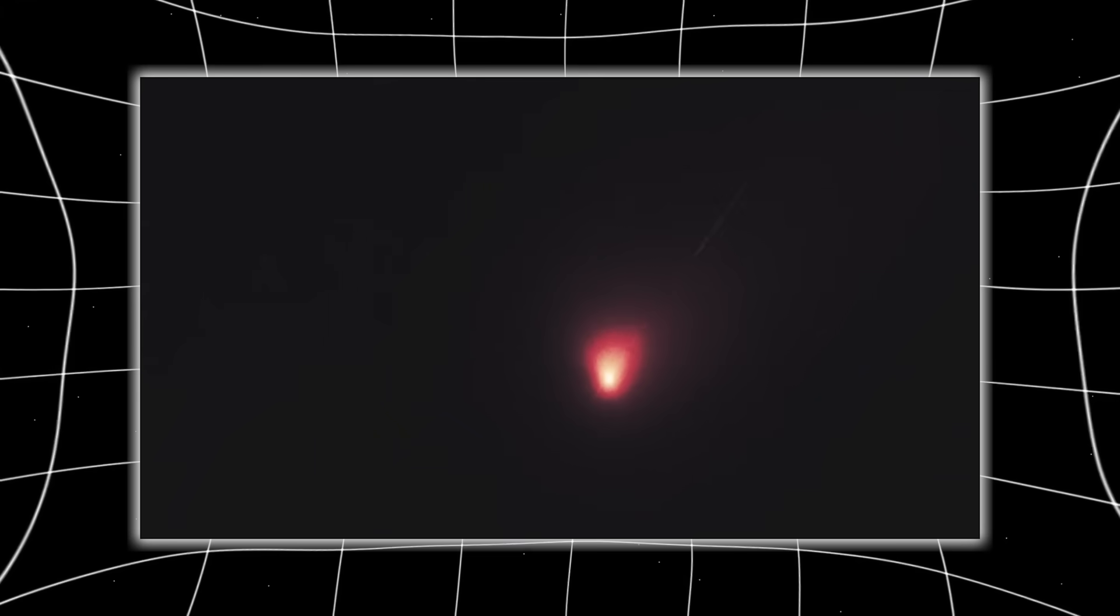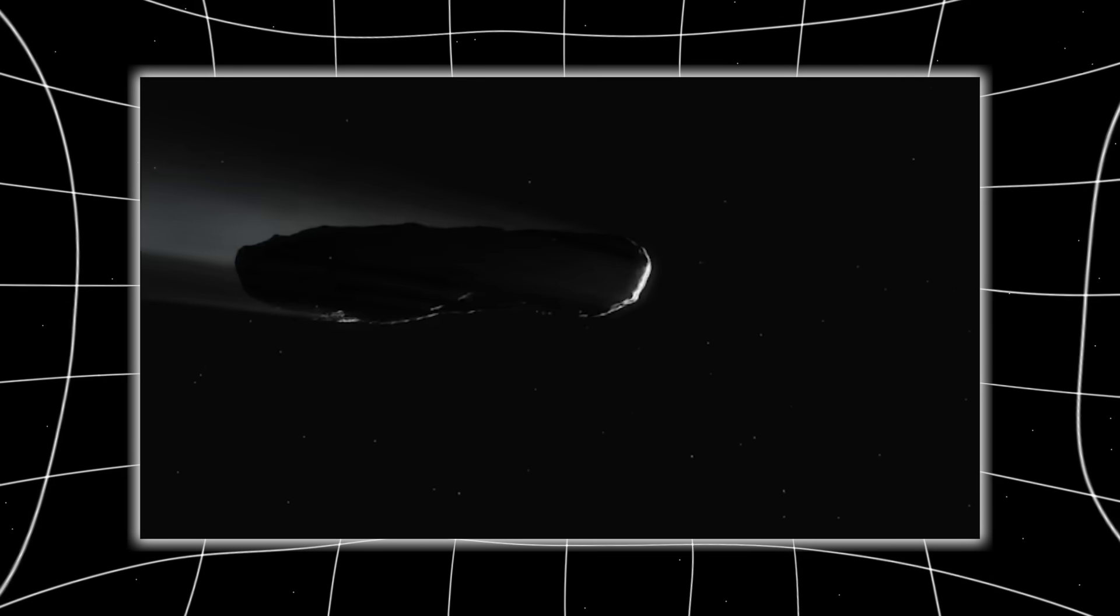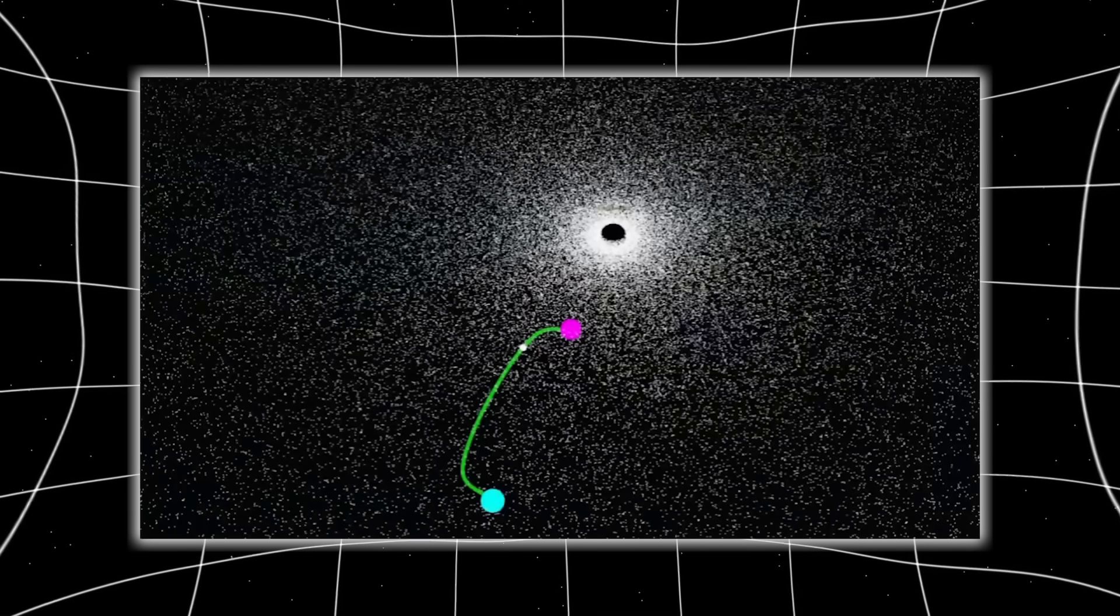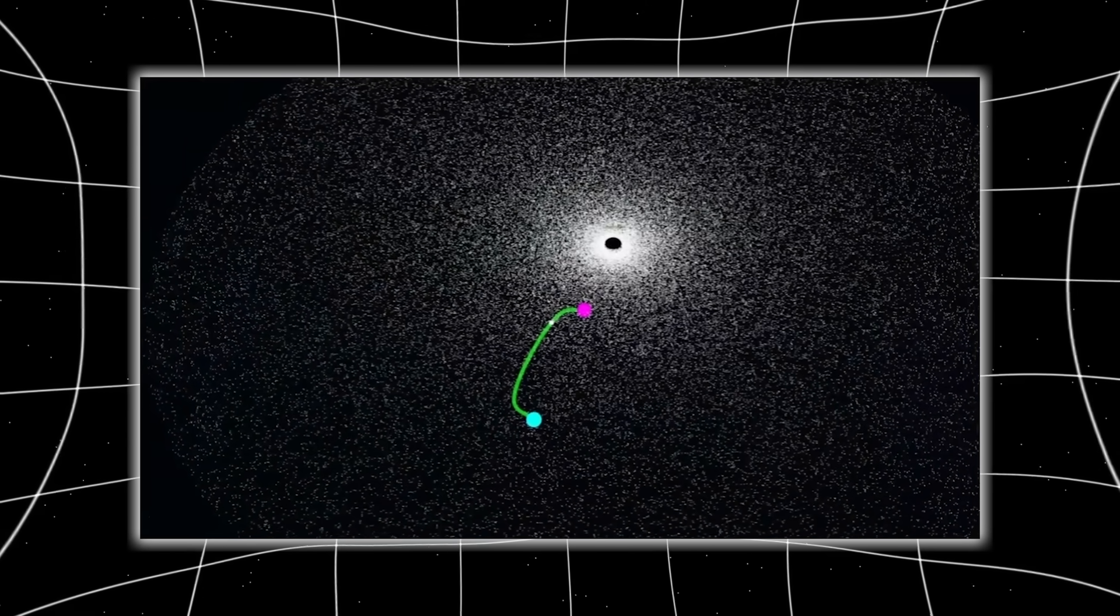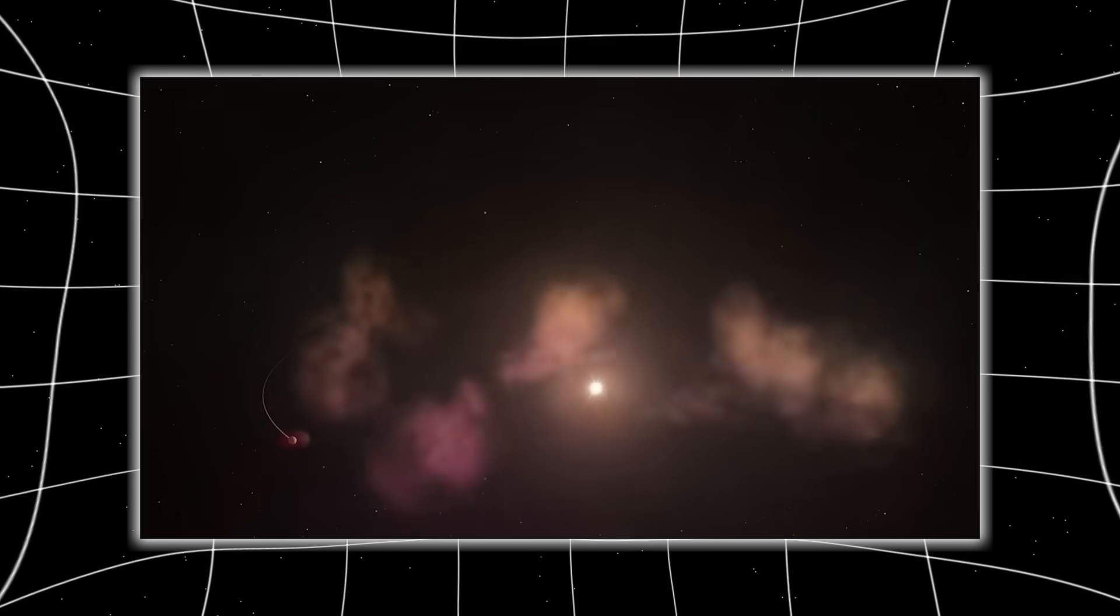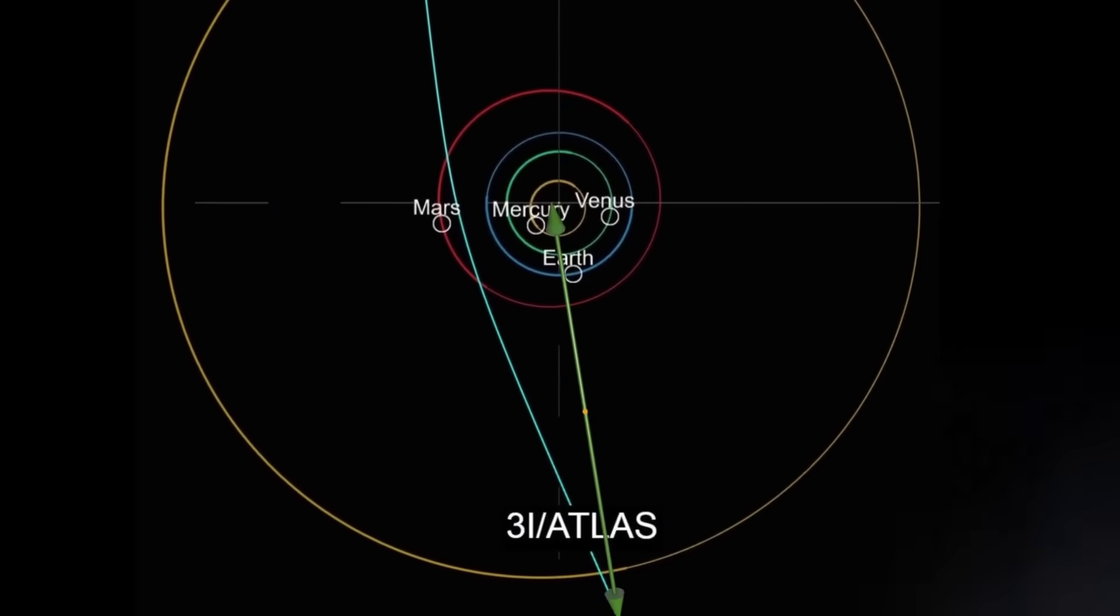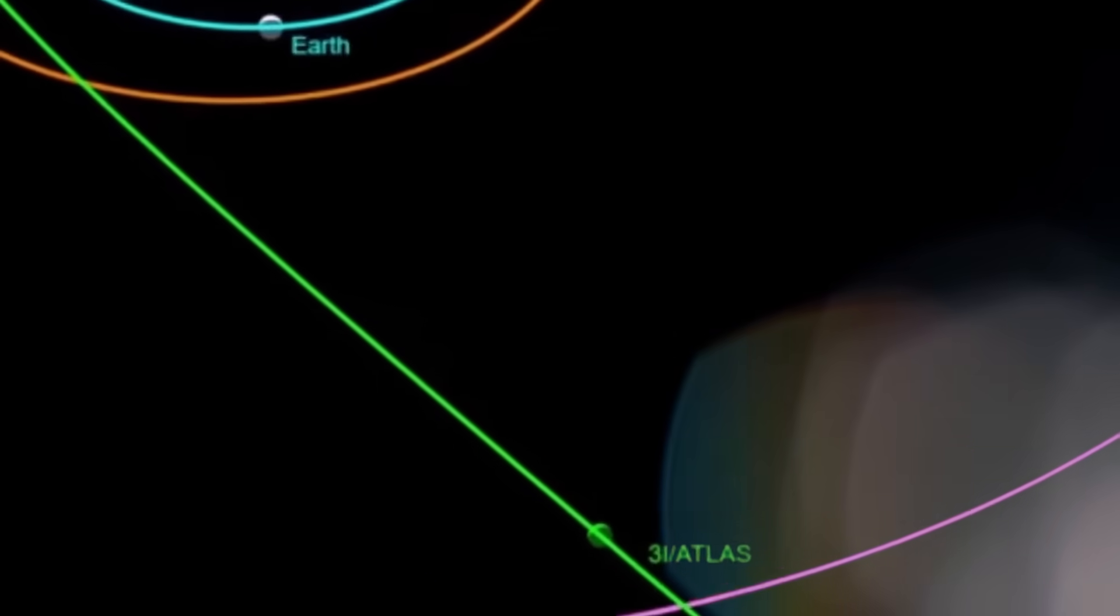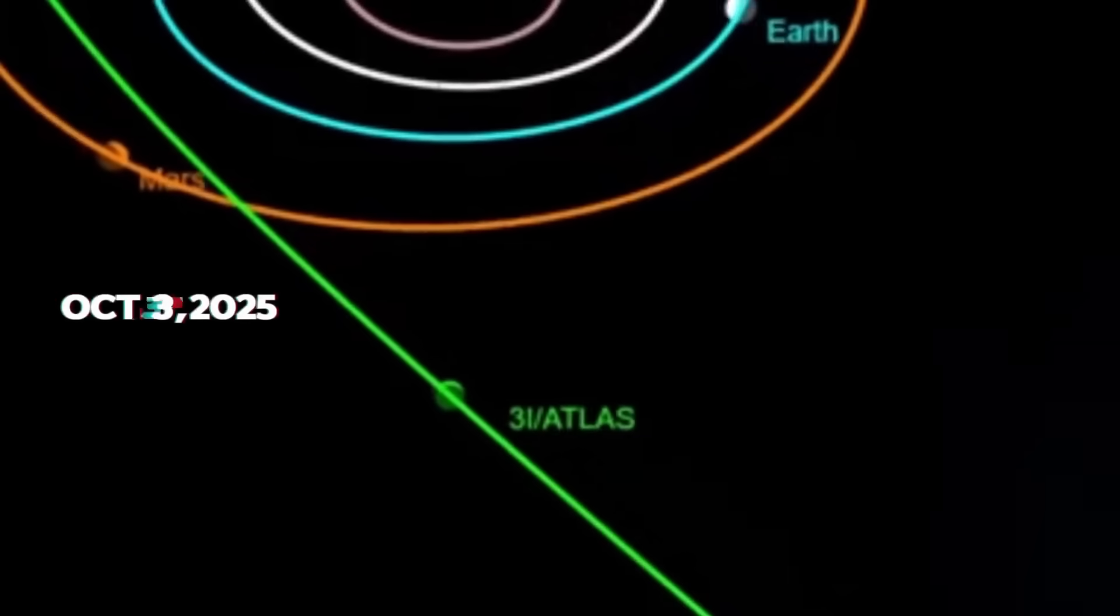And if it isn't artificial, then we've just found a natural phenomenon so advanced and rare that it mimics design to the point of deception. Either way, the conclusion is the same. Our understanding of the universe is incomplete. And James Webb just held up a mirror to that ignorance. We are no longer staring into the void. The void, perhaps, is staring back, and what it sees might finally be worthy of attention.